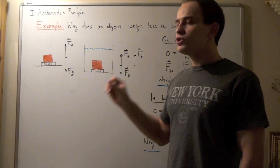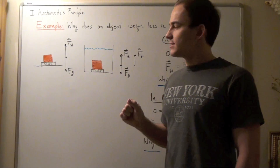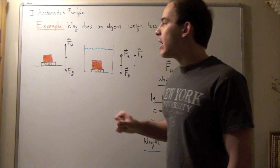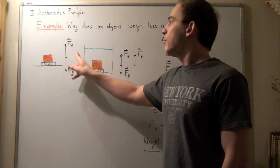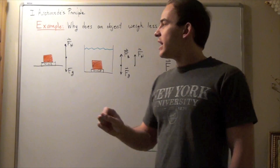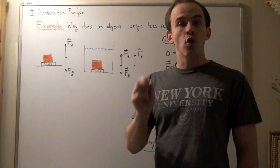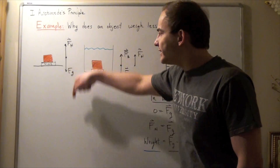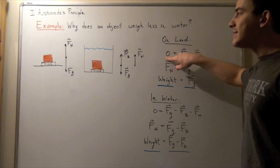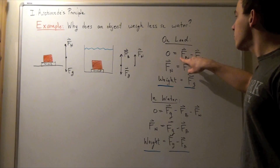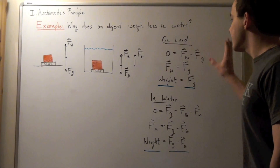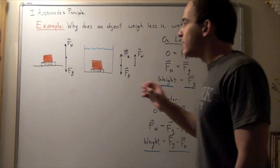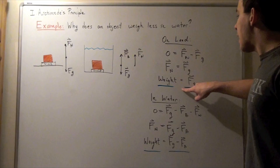Let's draw all the forces acting on our object along the y-axis. The force of gravity points downward, and the normal force that the scale exerts on the object points upward. Since the object is stationary, the net force along the y-axis is zero. Choosing upward as positive and downward as negative: normal force minus force of gravity equals zero, so the normal force equals the force of gravity — the weight reading is simply the force of gravity.